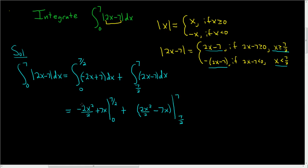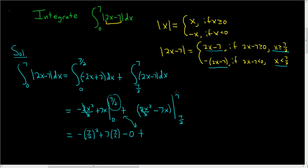Let's be really careful here. The 2s cancel in the first integral. We plug in 7/2 first: we get minus (7/2) squared plus 7 times (7/2). Then we subtract plugging in 0, but everything is fortunately 0, so minus 0. For the second integral, the 2s cancel as well, and we plug in 7 first.